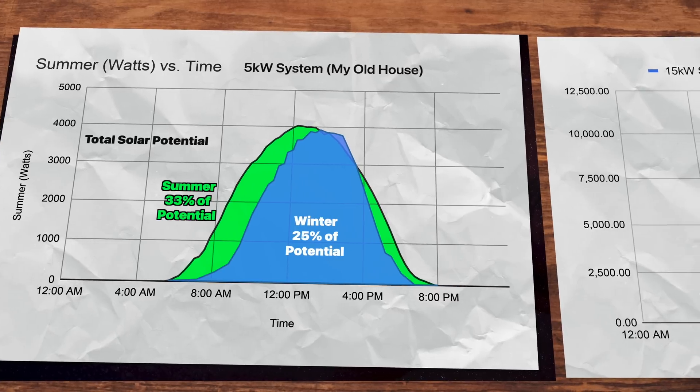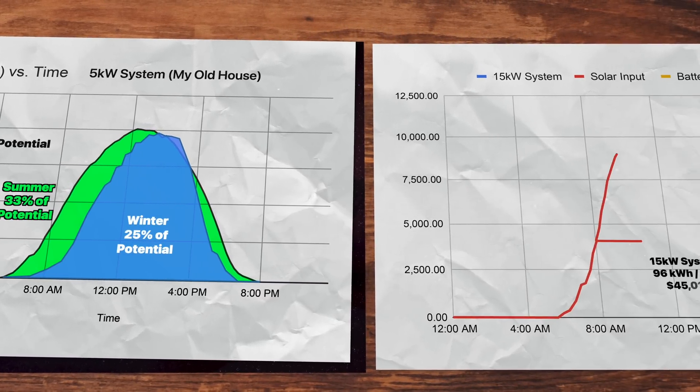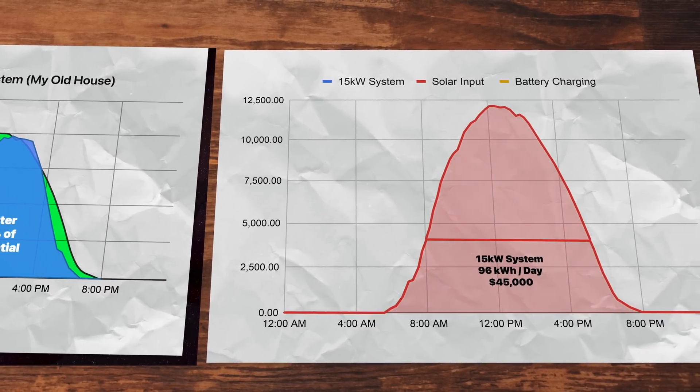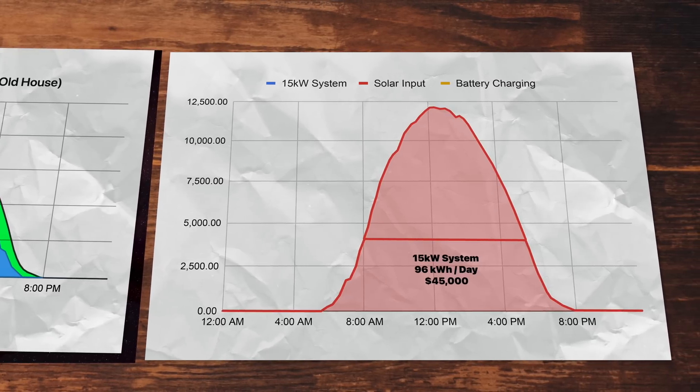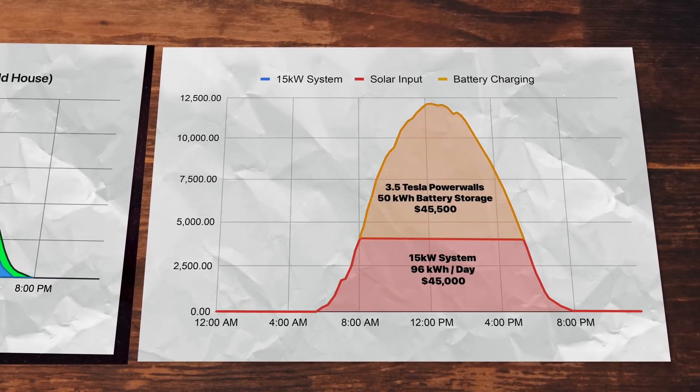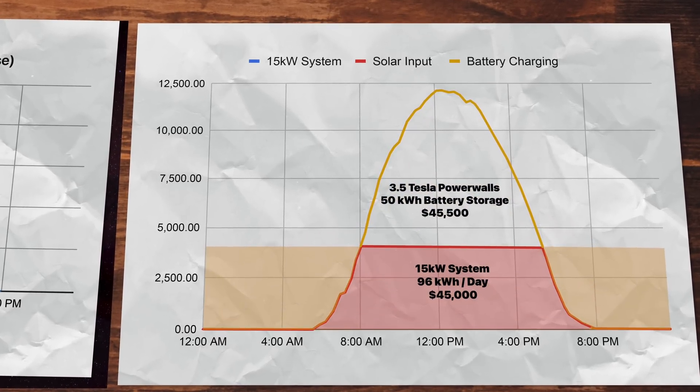Based on today's prices of $3 per watt, a 5-kilowatt system would cost $15,000. But what if you wanted pure sun power at 4,000 watts for an entire 24-hour period, the theoretical potential of the system? We'd need 96 kilowatt hours, or three times as many solar panels and 50 kilowatt hours of energy storage and batteries, or roughly three and a half Tesla power walls. Raising our original cost from $15,000 to $90,500.